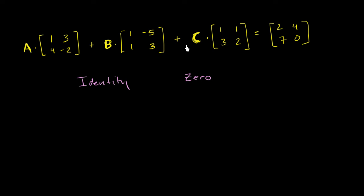I'm assuming you've given a go at it. So let's go entry by entry. If you look at this first entry right over here, how can we get a two for this top left entry? When we multiply, if any of these are identities, you just get the value of the matrix. If any of these are zero, then essentially that product doesn't get added. If A was a zero matrix and B and C were identity matrices, you would add one plus one to get two.